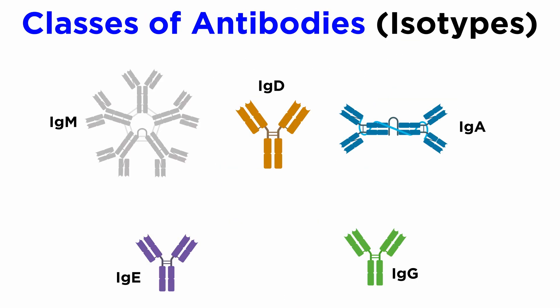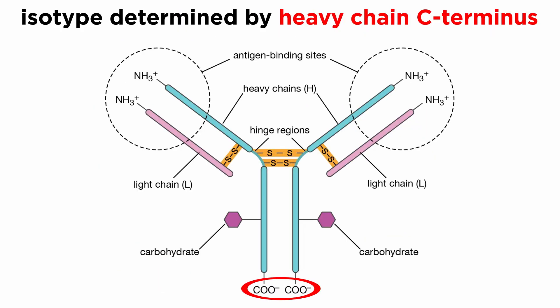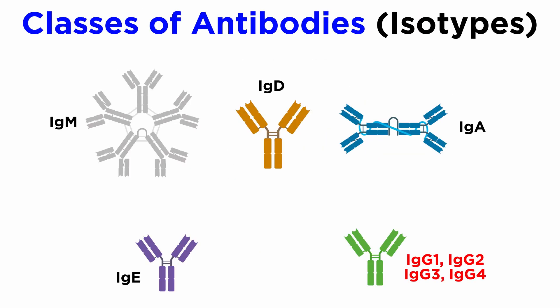Five isotypes, or classes, of antibodies exist: IgM, IgD, IgG, IgA, and IgE, which are distinguished according to the C-terminus regions of the heavy chains. These are constant regions, designated as FC, and therefore do not participate in antigen binding. In addition, there are four subclasses or isotypes of IgG antibodies: IgG1, IgG2, IgG3, and IgG4.